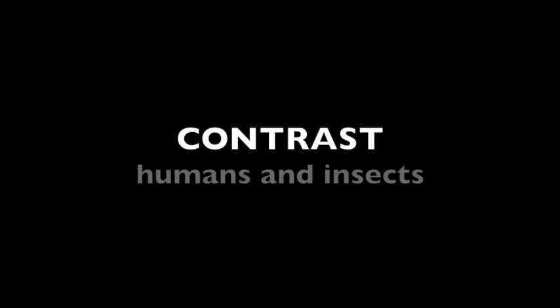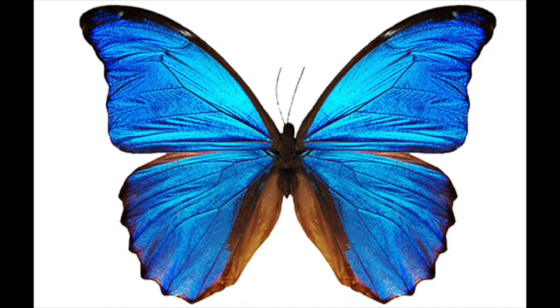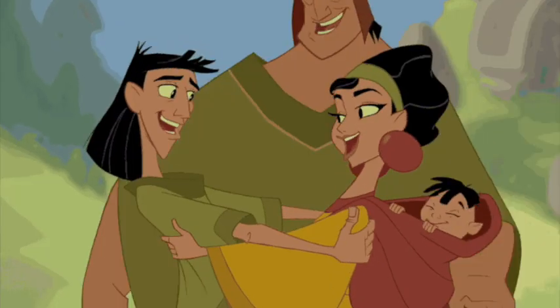Let's contrast humans versus insects. There's a lot of ways that humans are very different than insects. Humans walk on two legs. We talk to each other. We do not have wings, but insects do. We brush our teeth. And we love each other.